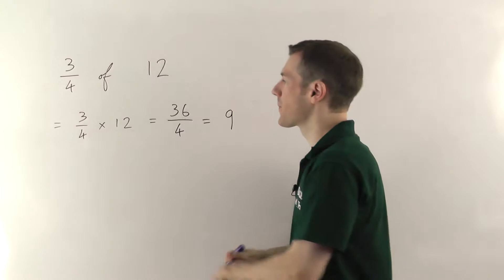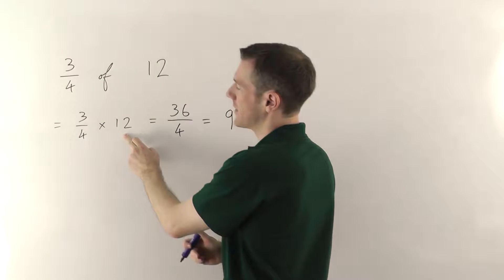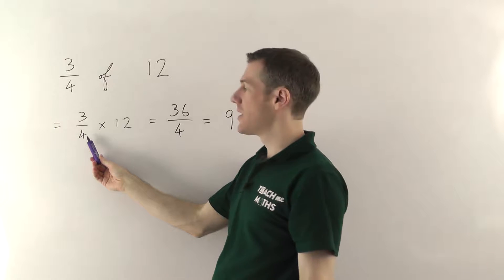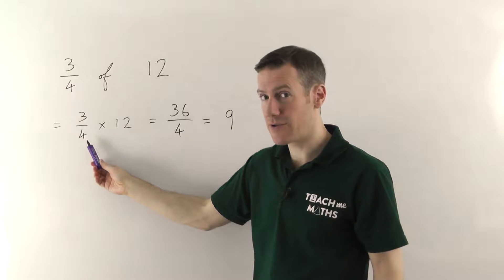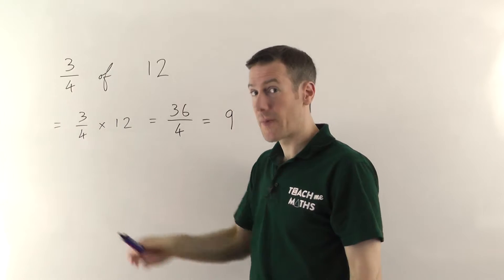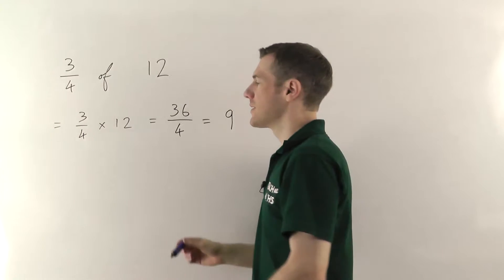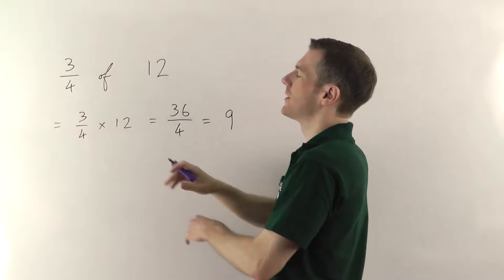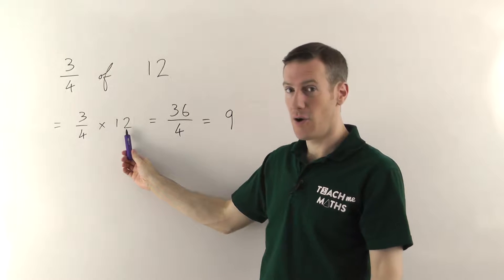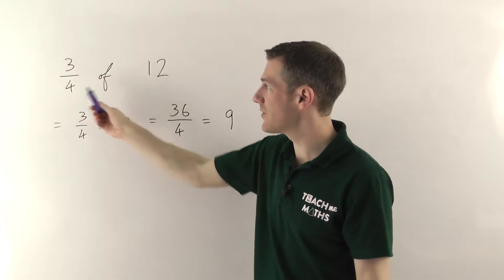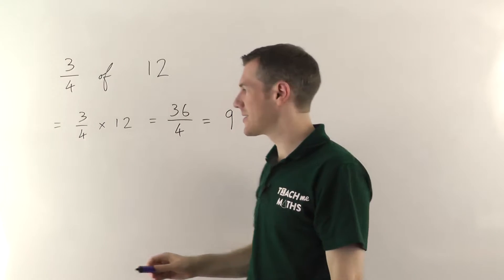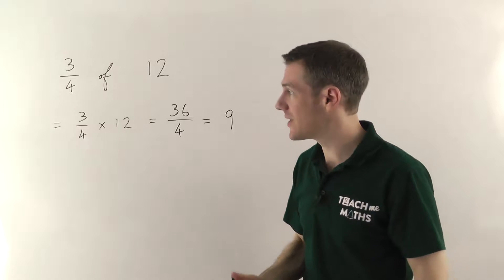Now there's one thing I want to point out here. When you're multiplying fractions like this, effectively you're timesing by the top and dividing by the bottom. But it doesn't actually matter which order you do it. If you want to divide by the bottom first and then times by the top, it still works. You need to be a little bit careful — that doesn't work in every situation, but if you're ever multiplying a fraction by a whole number it does always work. So whenever you're finding a fraction of an amount, you can always do the division first and then the multiplication.